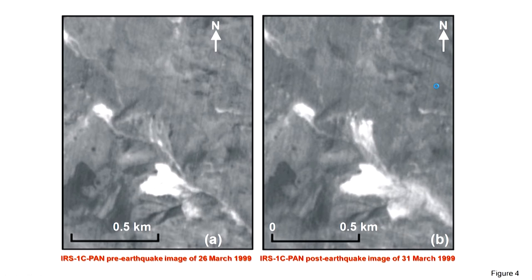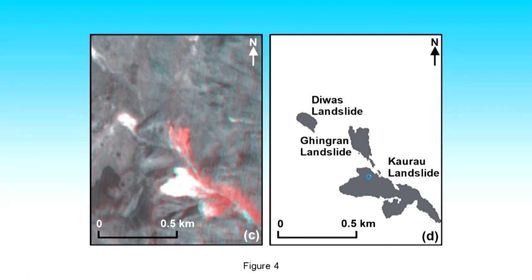Another example: on the left side you see the pre-earthquake image and on the right side the post-earthquake image, again with a 5-day time difference. Before the earthquake on 26th March, and after the earthquake on 31st March — remember the earthquake occurred on 29th March. The pre-earthquake image already shows some existing landslides, but a new landslide appeared and existing ones were enhanced. The PCT image shows this very clearly: red parts show changes during those 5 days induced by the earthquake, and white parts show no changes.